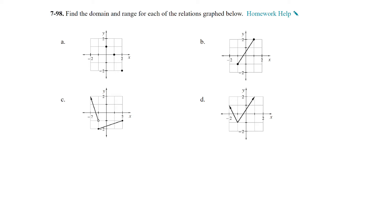Question 98: find the domain and range for each of the relations graphed below. Graph A is a discrete graph with just 3 points. The ordered pairs are (0, 1), (1, 0), and (2, −2). The domain is just the x-values: {0, 1, 2}. The range is the y-values in numerical order: {−2, 0, 1}. For graph B, we have a continuous graph with a beginning and end at (1, 2) and (−1, −1). The domain is all values of x greater than or equal to −1 and less than or equal to 1.